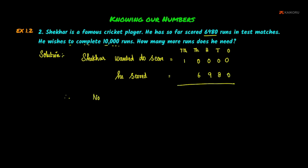Therefore, the number of runs needed is equal to 10,000 minus 6,980. We apply the minus operation column by column: Ones minus Ones, Tens minus Tens, and so on.